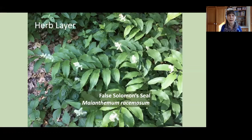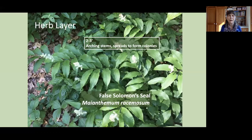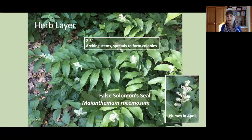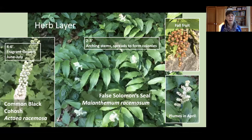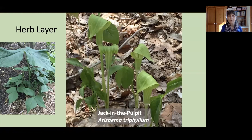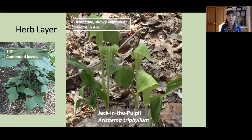In the herb layer of the forest, we'll see False Solomon's Seal. This is a plant with arching stems about two to three feet high, and it will spread via rhizomes to form colonies. It has attractive flower plumes that appear in April, and then a fall fruit that turns red. A taller plant in the herb layer is Common Black Cohosh, Actaea racemosa, at four to six feet, with spires of fragrant flowers from June to July. Also in the herb layer, Jack in the Pulpit, Arisaema triphyllum — a very distinctive, showy wildflower that blooms in April. When the flower head fades, compound leaves grow above it at one to two feet, and later in the summer a late fruit will develop.